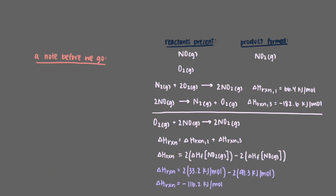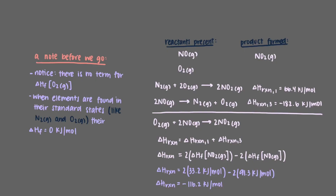One note before we conclude: notice that there is no term in the equation for the enthalpy of formation of oxygen. When elements are found in their standard states, like nitrogen and oxygen, their enthalpy of formation is 0 kJ per mole. This is because there is no reaction to form the element's natural state — it simply exists like this.